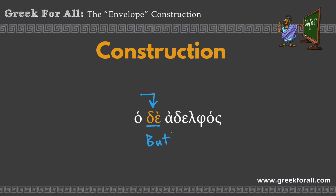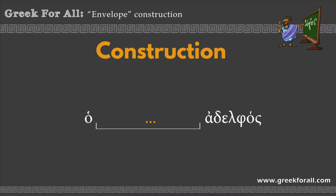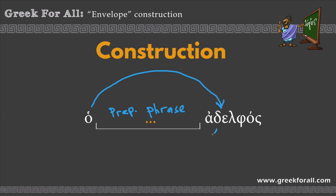So this is what we're going to study in this lesson. We have the article, we have the word, and in between we will see a lot of words — specifically, a prepositional phrase inserted in between the article and the word it modifies. This prepositional phrase can be as long as three, four, five, or six words. When we see this construction, how do we translate it? First, we begin with the article, go to the word it modifies, and then go back to the beginning of the prepositional phrase and translate it. It's like a circle — this is why it's called the envelope construction. It envelops the phrase inside.